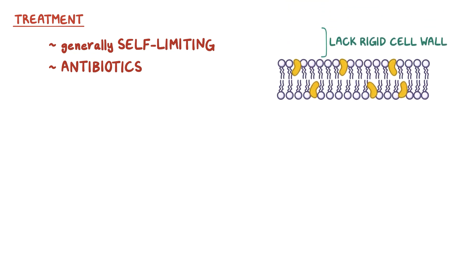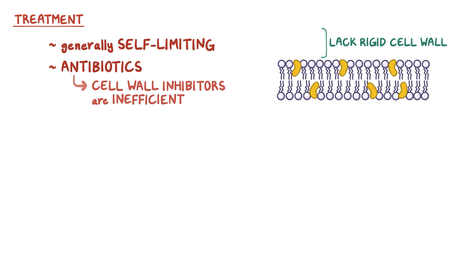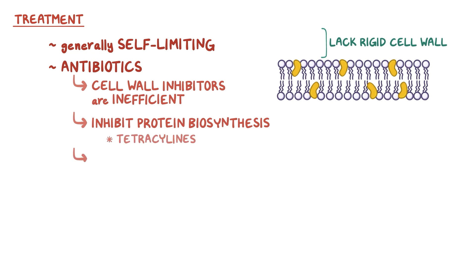Atypical pneumonia is generally self-limiting, but if it doesn't resolve on its own, antibiotics are needed. And since mycoplasmas don't have a cell wall, cell wall inhibitors like beta-lactam antibiotics are inefficient, so treatment relies on antibiotics that inhibit protein biosynthesis, like tetracyclines, or macrolides like erythromycin and azithromycin.